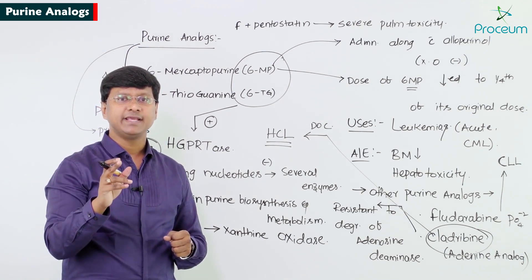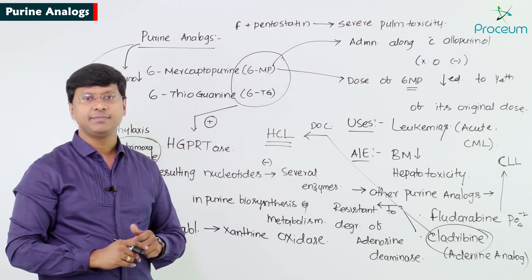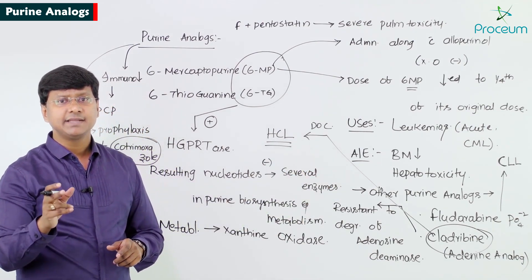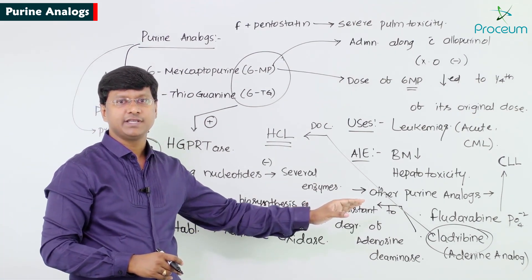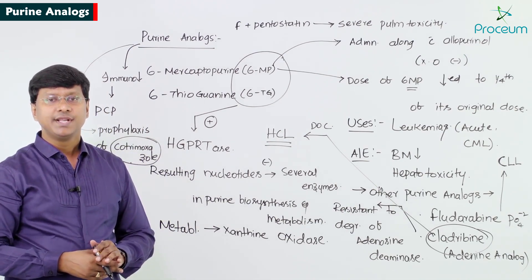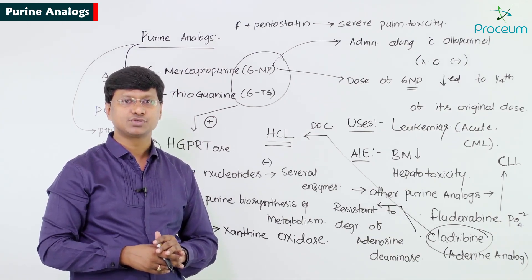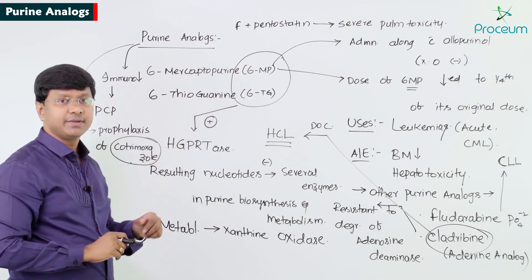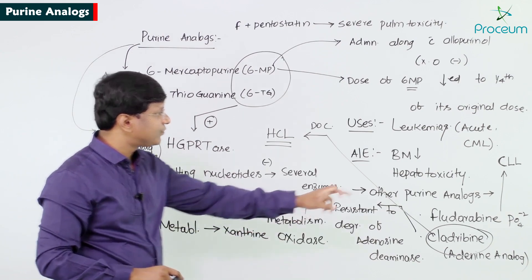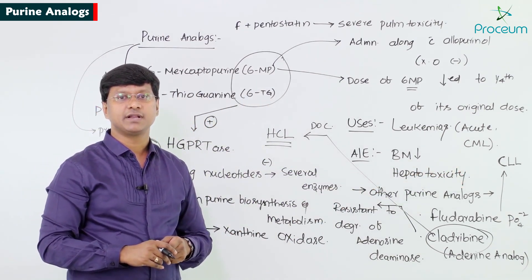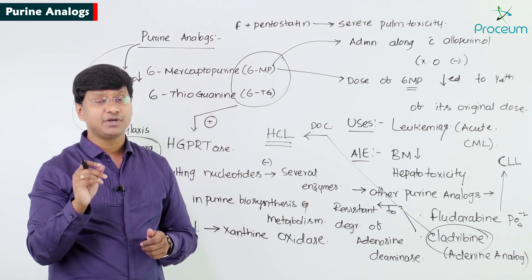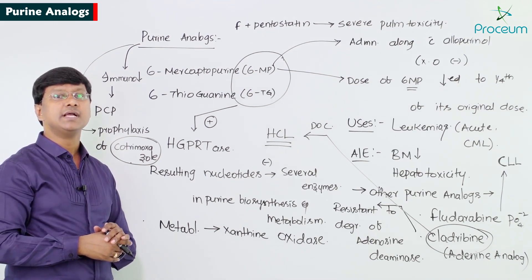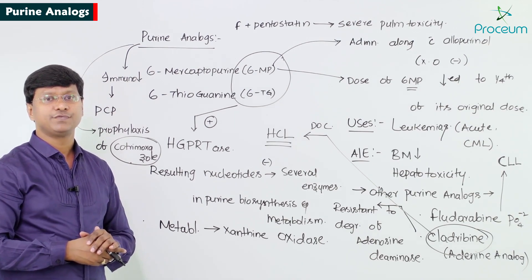Purine anti-metabolites are used mainly for acute leukemia and chronic myeloid leukemia. Adverse effects include bone marrow suppression and hepatotoxicity. Cladribine, an adenine analog resistant to degradation by adenosine deaminase, is the drug of choice for hairy cell leukemia. Fludarabine is the drug of choice for chronic lymphocytic leukemia; combining it with pentostatin causes severe pulmonary toxicity. All purine analogues cause immunosuppression on long-term use, so cotrimoxazole prophylaxis is given to prevent Pneumocystis carinii pneumonia.